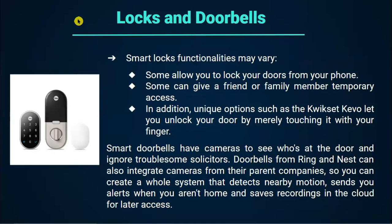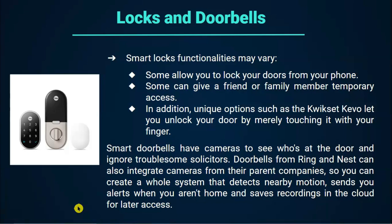Locks and doorbells. Smart lock functionalities may vary. Some allow you to lock your doors from your phone. Some can give a friend or family member temporary access. Unique options such as the Weiser keyboard let you unlock your door by merely touching it with your finger. Smart doorbells have cameras to see who is at the door and ignore troublesome solicitors. Doorbells from Ring and Nest can also integrate cameras from their parent companies so you can create a whole system that detects nearby motion, sends you alerts when you are away from home, and saves recordings in the cloud for later access.